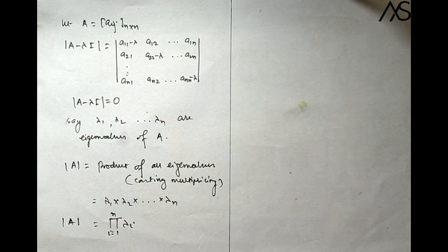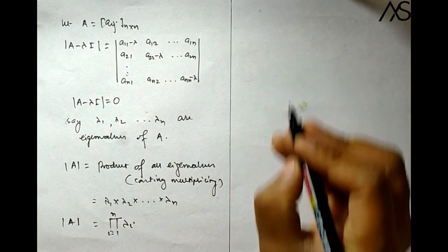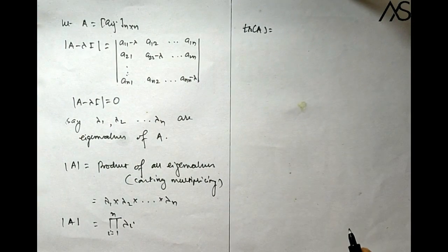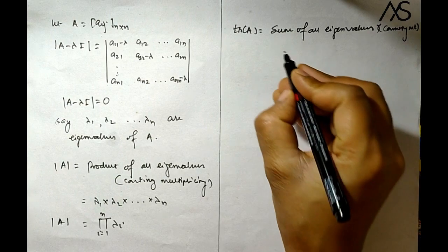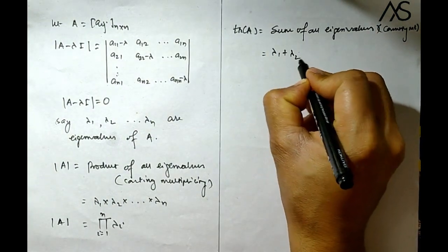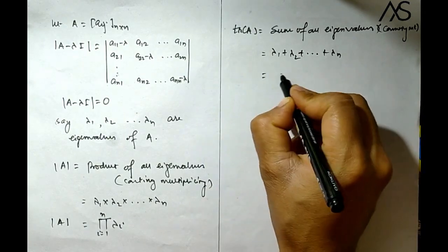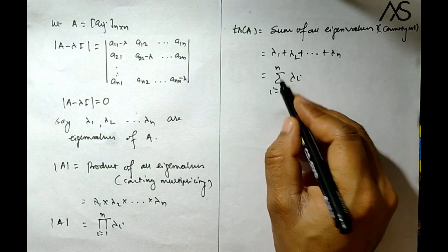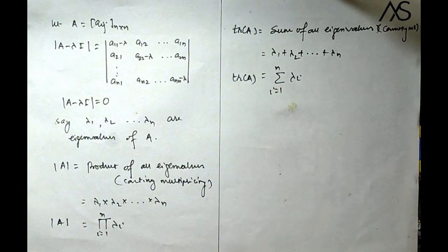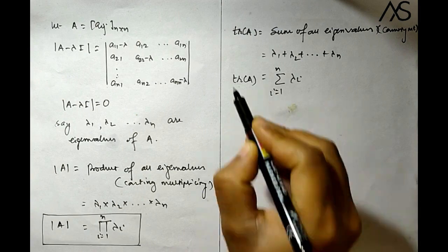The trace of matrix A equals the sum of all eigenvalues counting multiplicity — that is, lambda 1 + lambda 2 + ... + lambda n, written as the summation of lambda i for i from 1 to n. So if we know the eigenvalues, we can easily find both the determinant and trace of the matrix.